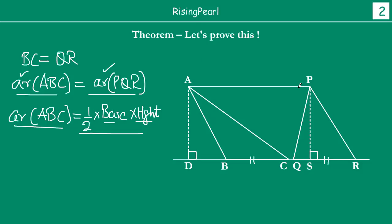Now, we know that this triangle's base is equal to this triangle's base. So we are going to find out what is the relationship between this height AD and this height PS. That will be our strategy, and then we are going to prove this theorem. When you join AP, then this line AP will be actually parallel to the line DR. This is what we want to show, because our theorem is telling us that if you have two triangles with equal bases and equal areas, then these two triangles must lie between the same parallel lines.